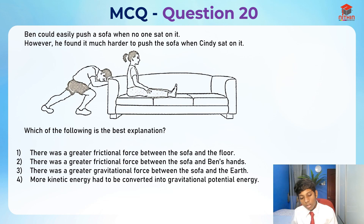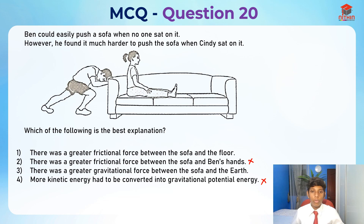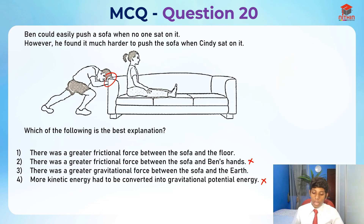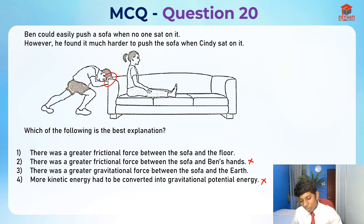Right off the bat, you can say that option 4 and option 2 have no relation to this. The friction on his hands does not matter whether he can push the sofa or not. And more kinetic energy having to be converted into gravitational potential energy does not make any sense at all.